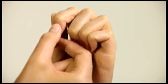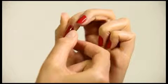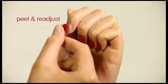Grasp the middle of the nail strip between your thumb and index finger and lay rounded edges against pushed back cuticles. To realign, simply peel nail strip and readjust.